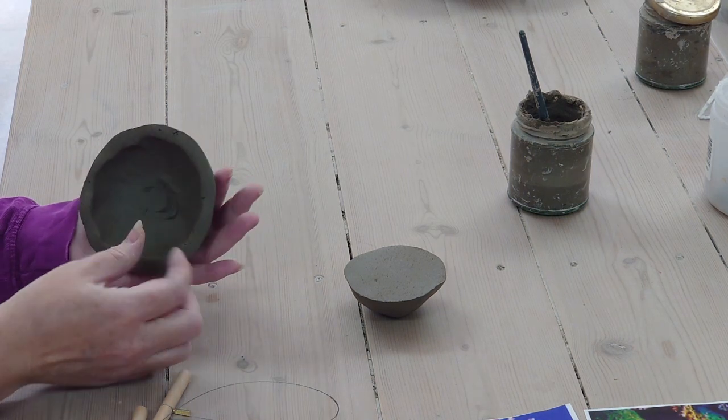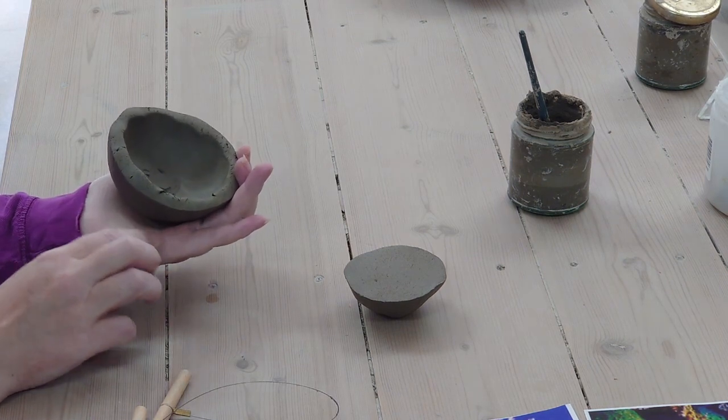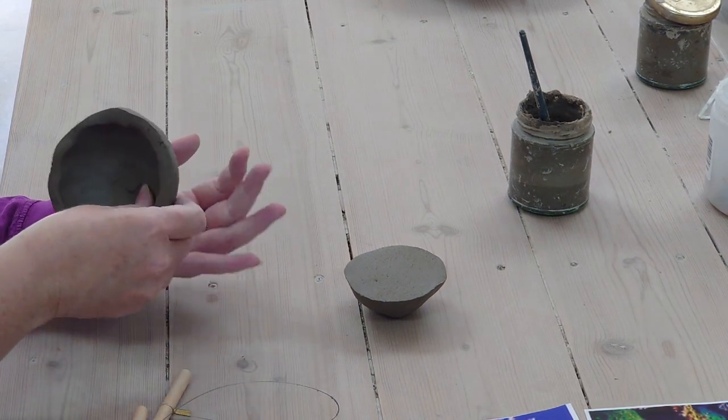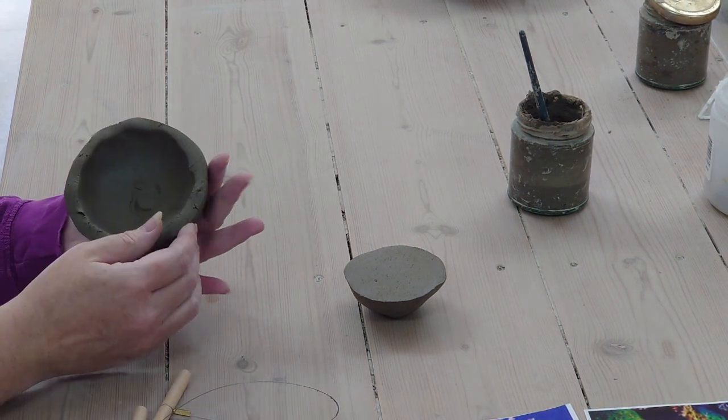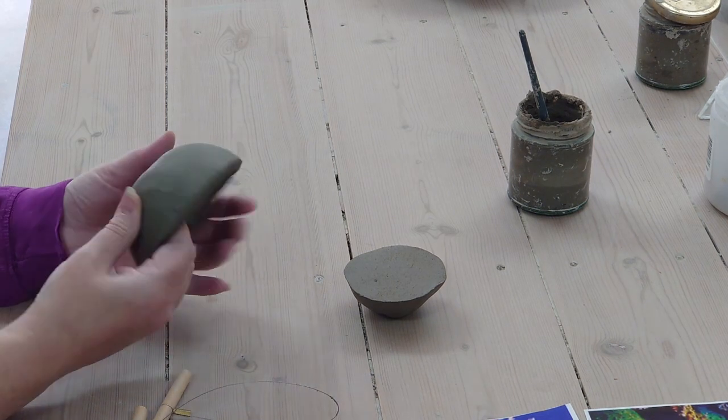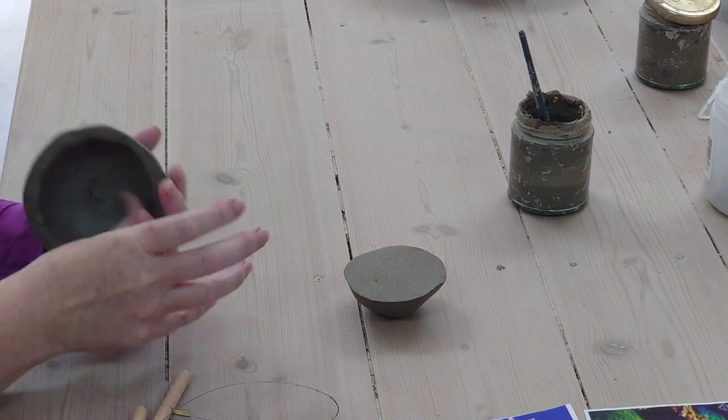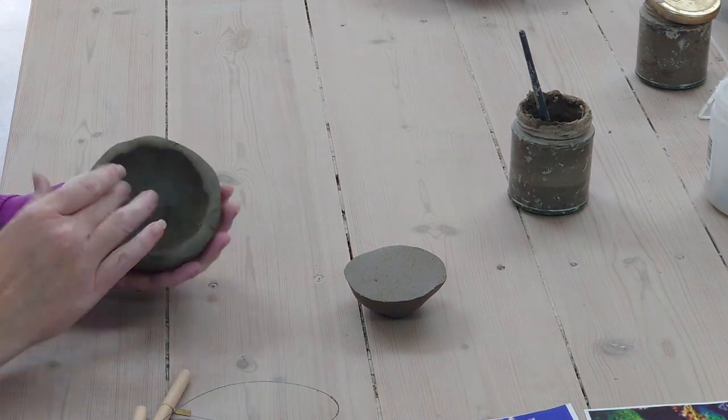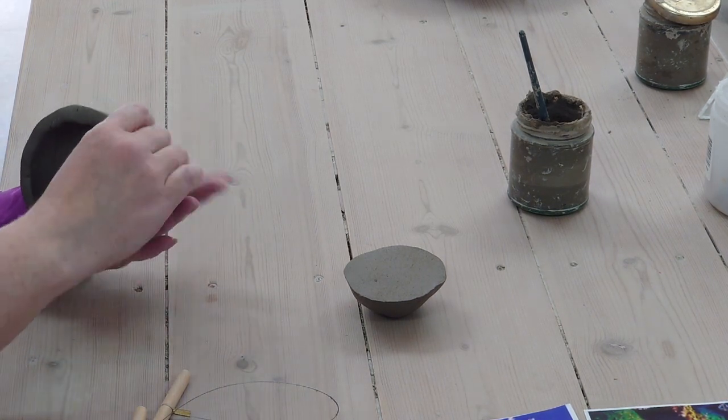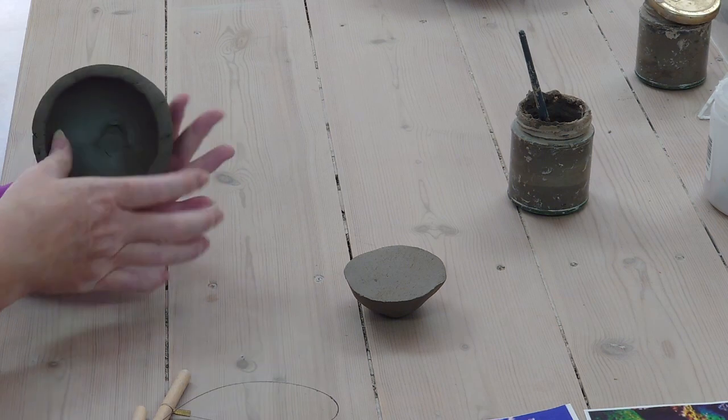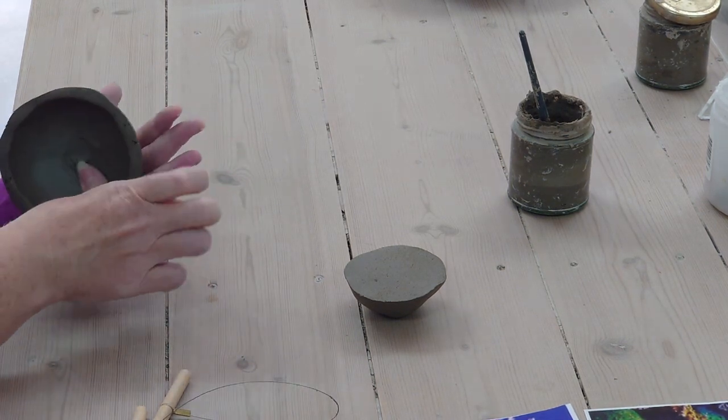I'm then going to smooth using the pad of my thumb, making sure that I'm pressing against the palm of my hand, trying not to press against my fingers just because it will put finger marks into the outside of the clay. Smoothing with the pad of my thumb helps neaten and tidy on the inside but it also helps even out the thickness of the clay within the bowl.